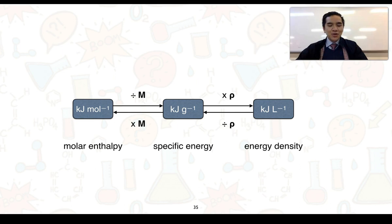This flow chart allows you to convert from one set of energy units to another. If we start on the left we've got the molar enthalpy in kilojoules per mole. To convert it into the specific energy which is kilojoules per gram, we just need to divide it by the molar mass. We can do the opposite, so multiply by the molar mass to convert back from kilojoules per gram to kilojoules per mole.